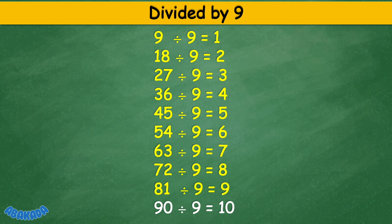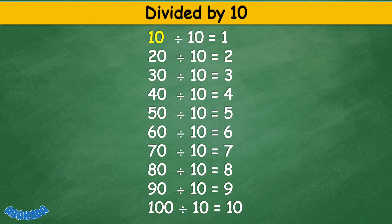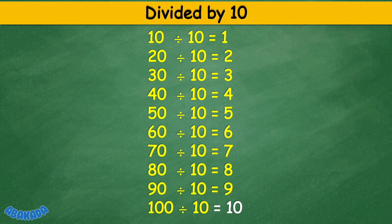90 divided by 9 equals 10. Divided by 10: 10 divided by 10 equals 1, 20 divided by 10 equals 2, 30 divided by 10 equals 3, 40 divided by 10 equals 4, 50 divided by 10 equals 5, 60 divided by 10 equals 6, 70 divided by 10 equals 7, 80 divided by 10 equals 8, 90 divided by 10 equals 9, 100 divided by 10 equals 10.